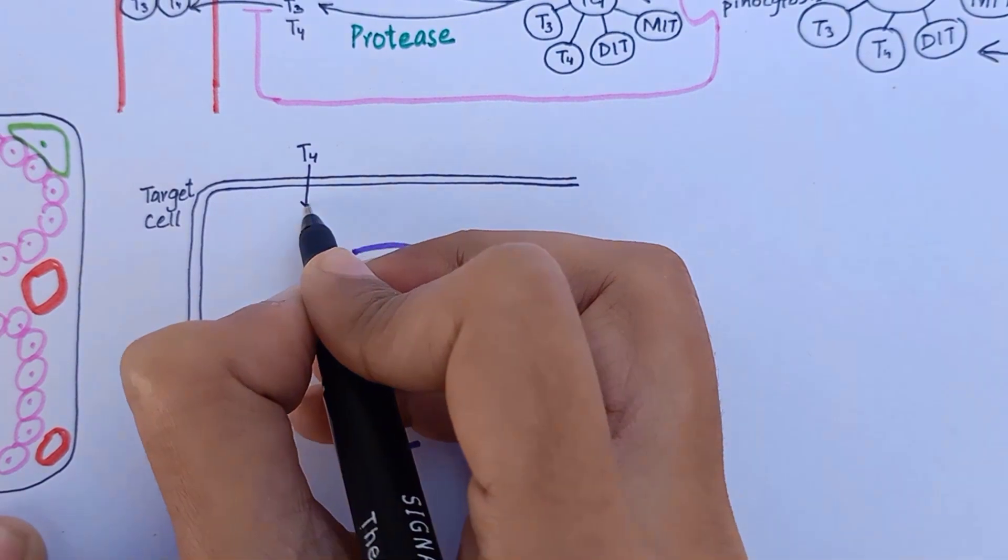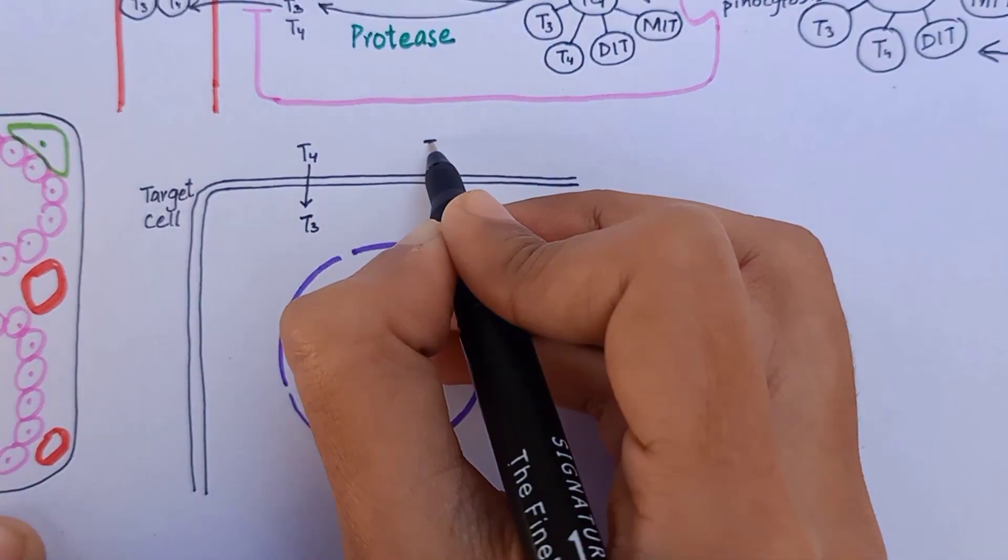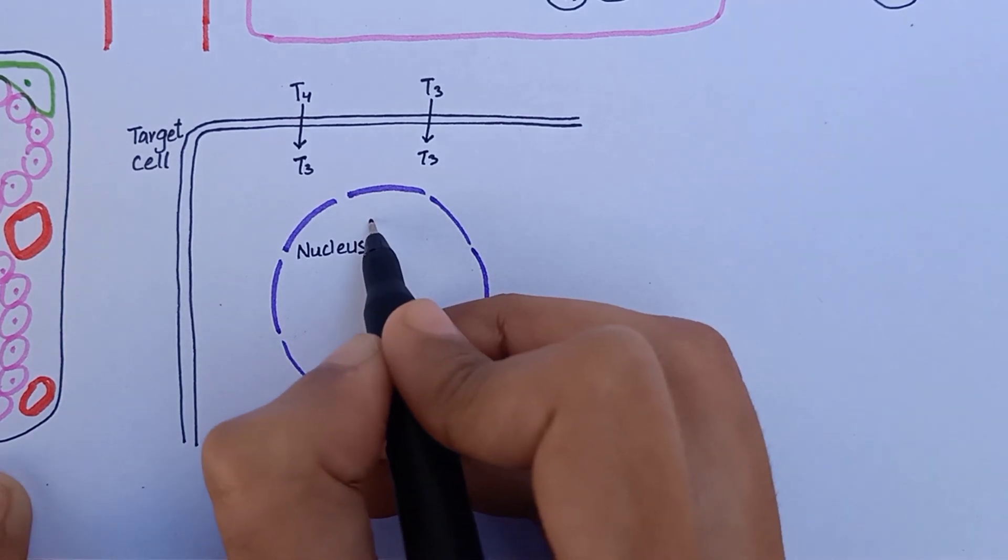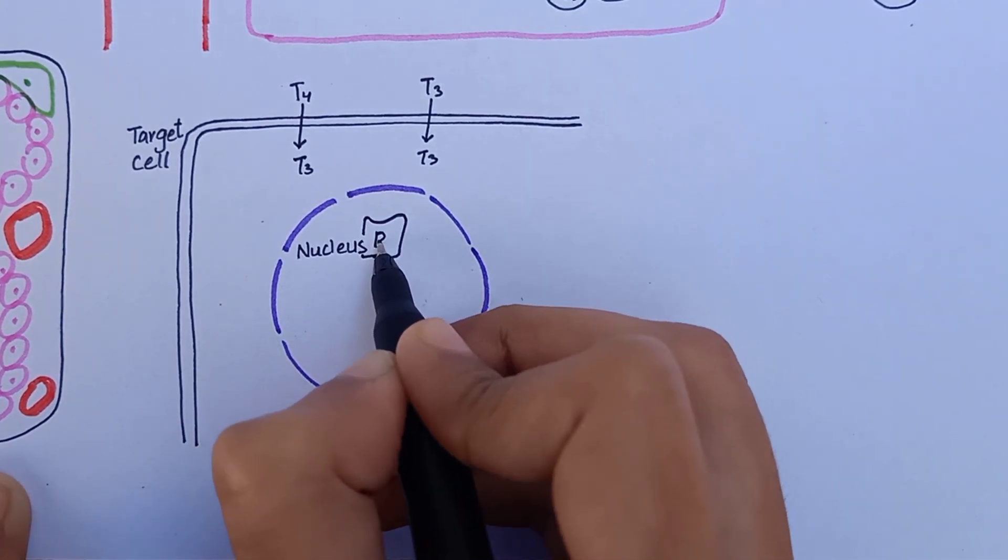As T3 and T4 reach the target tissues, almost all of T4 is converted into T3, because the intracellular receptors have higher affinity for T3.